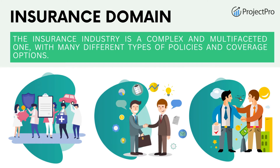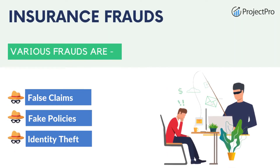Insurance fraud can happen at any stage of the process, from the sale of the policy to the filing of the claim. Fraud can occur in many ways including false claims, fake policies, and identity theft. Insurers use a variety of tools and techniques including data analytics and machine learning to prevent and detect fraudulent activities. It can involve individuals or groups, including policyholders, insurers, or third parties, making sophisticated tools and techniques necessary.